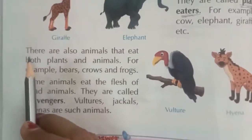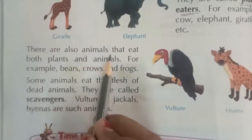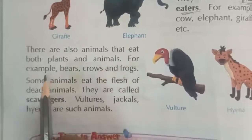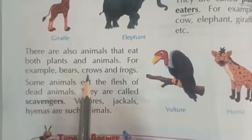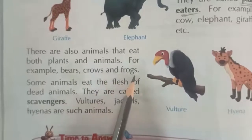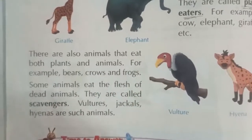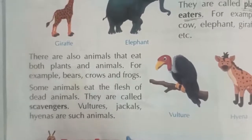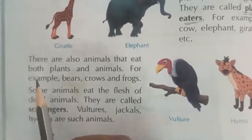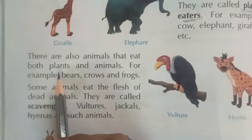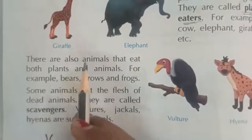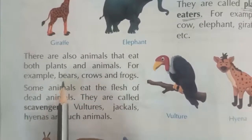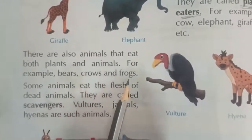The third type is animals that eat both plants and animals. For example, bear, crows and frog. These animals eat both plants and other animals.